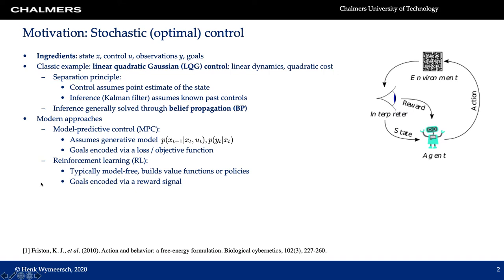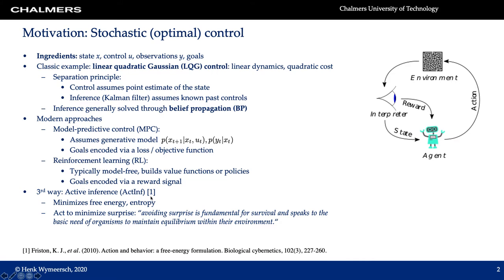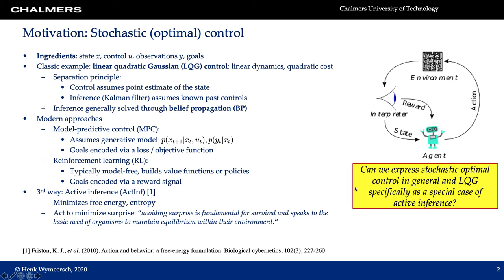In this work we will use a third way called active inference. Roughly speaking, active inference tries to minimize free energy or entropy — or, taking a quote from the paper, it acts to minimize surprise. Avoiding surprise is fundamental for survival and speaks to the basic need of organisms to maintain equilibrium with their environment. The main question we want to answer is: can we express stochastic optimal control in general, and LQG control specifically, as special cases of active inference?